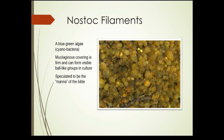Blue-green algae can group together in colonies, and the surrounding mucus can group them to form visible ball-like structures when grown in culture. There is some speculation that these groups of blue-green algae could be the manna referred to in the Bible. Keep in mind these are microscopic individual cells grouping together in huge numbers to form a structure visible to the naked eye — each small ball-like structure can contain millions of individual cells.